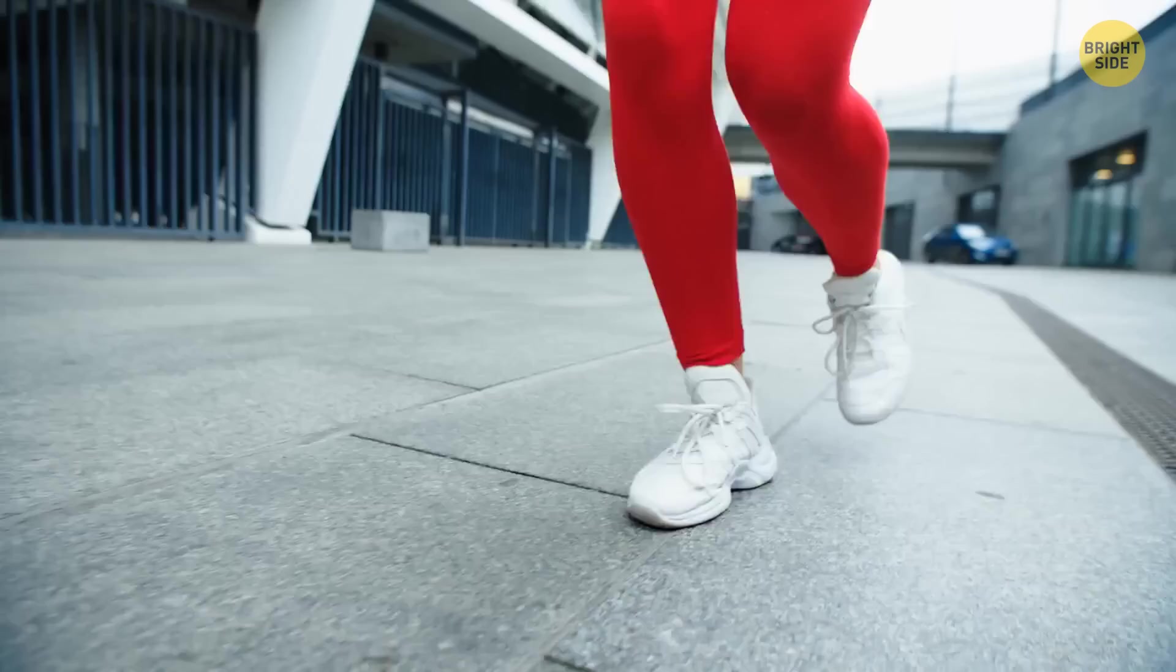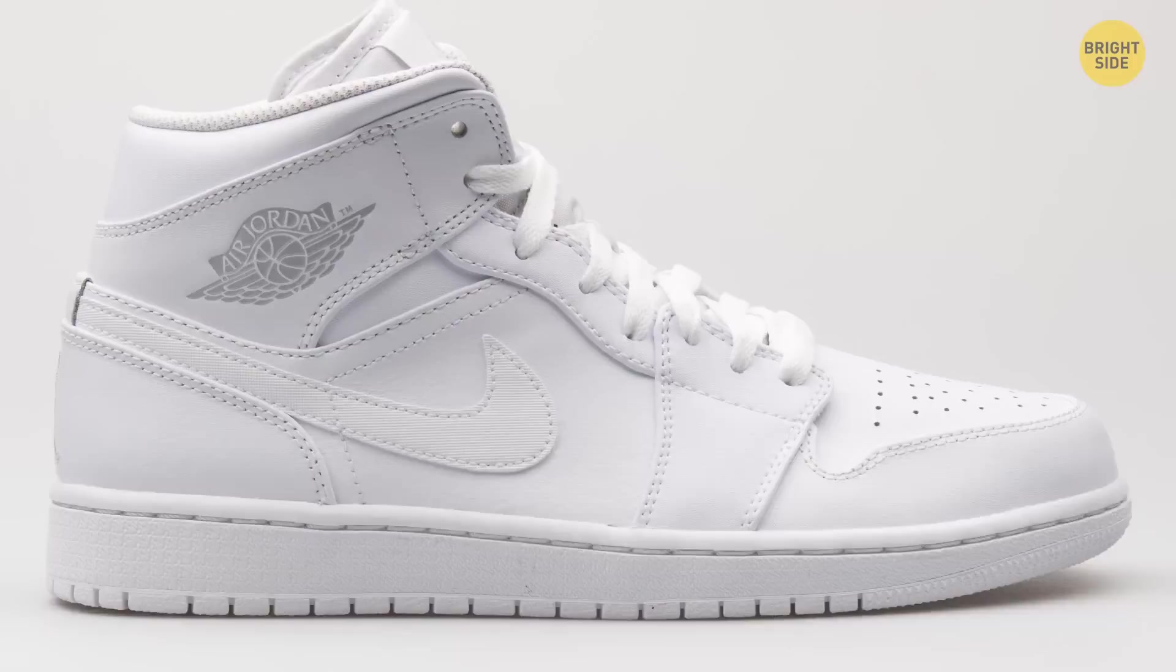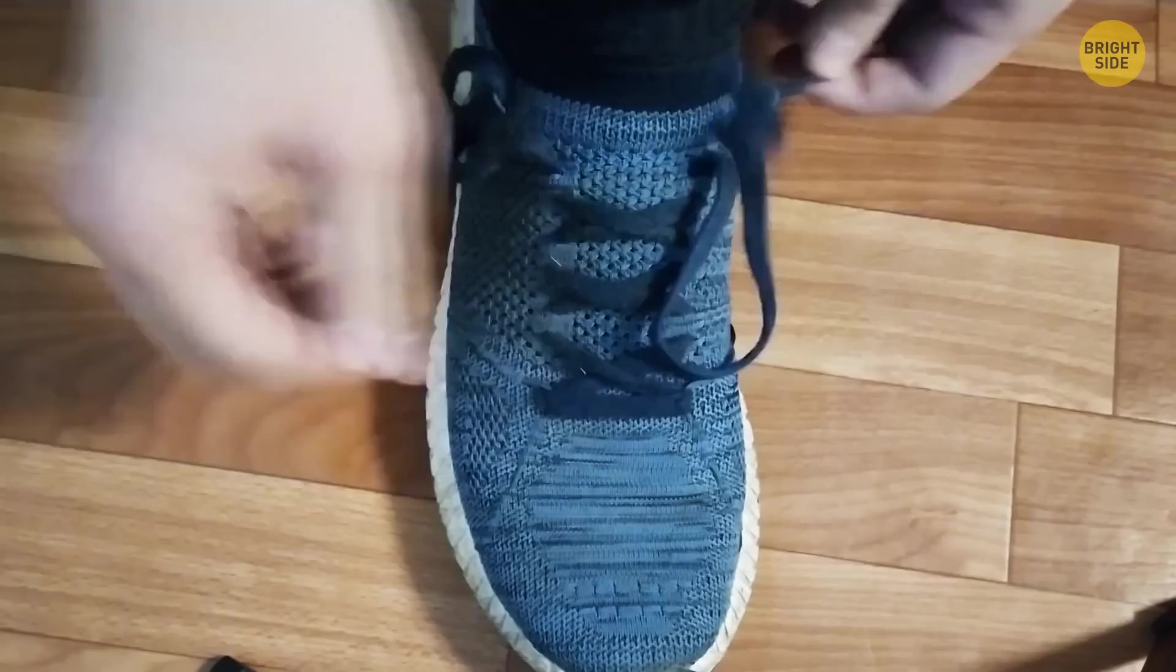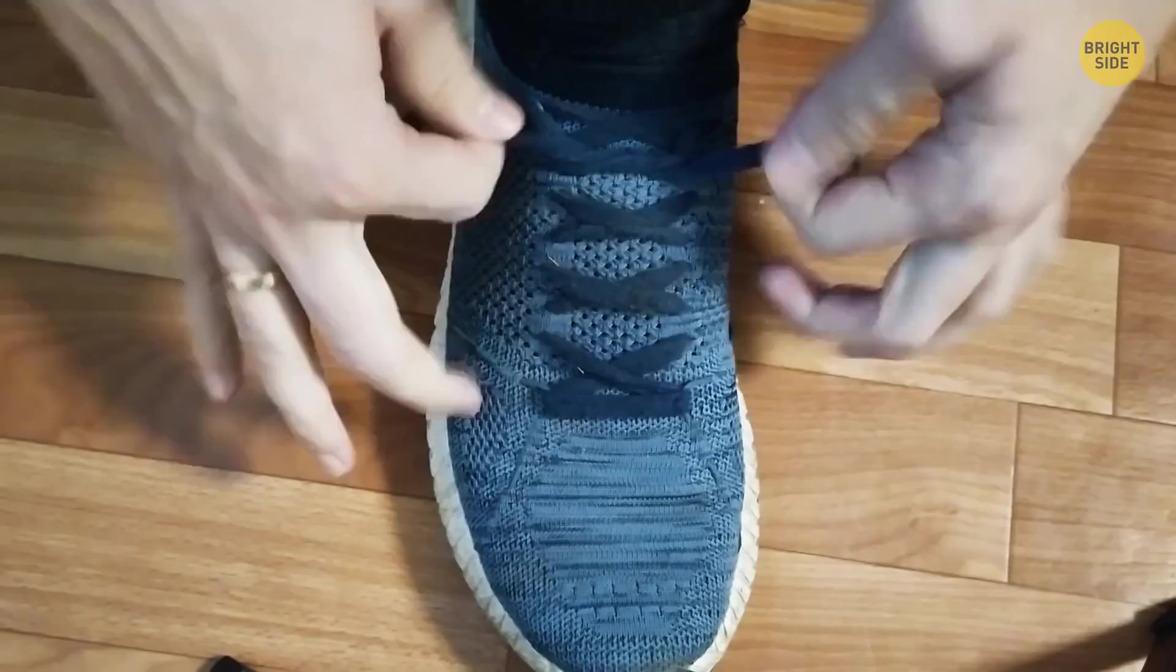Shoe manufacturers care about their customers. So, most running shoes now have a special anti-blister system, pre-installed. Sounds intense, but it's basically just that extra hole on top of your sneakers. Make a loop with the extra hole, inserting the lace backwards. Cross your laces and put them through the loops. Now, pull the laces down to lock your foot in place. Now, run!